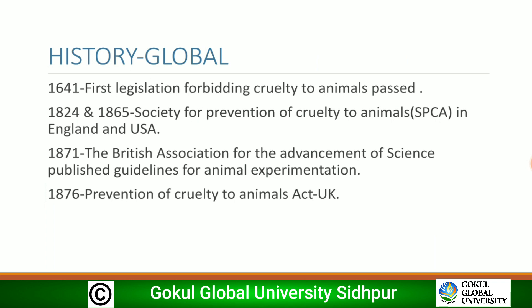Looking at the history of legislation, the first law forbidding cruelty to animals was passed in 1824. In 1865, the Society for Prevention of Cruelty to Animals (SPCA) was formed in England and the USA. In 1871, the British Association for the Advancement of Science published guidelines for animal experimentation, and in 1876 the Prevention of Cruelty to Animals Act was passed in the UK.